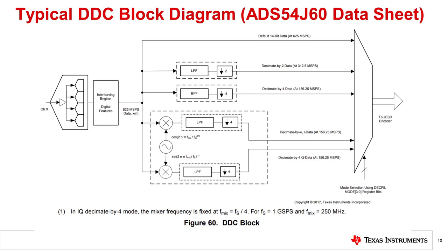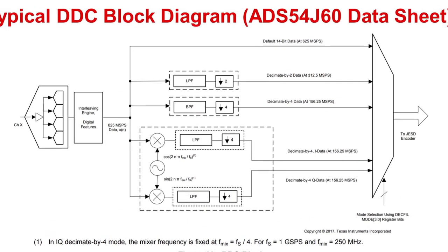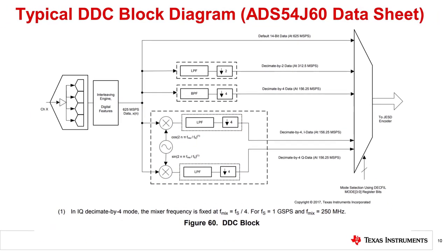Data sheets usually include block diagrams showing the functions available of the DDC. This slide shows an example of the DDC functions available inside the ADS54J60 ADC from TI. As you can see from this diagram, this part offers several functions, including a decimate-by-2 mode, decimate-by-4 mode, a mixer shift option followed by a decimate-by-4 block, and a DDC bypass mode. Decimation is accompanied by filtering, as can be seen in this block diagram.